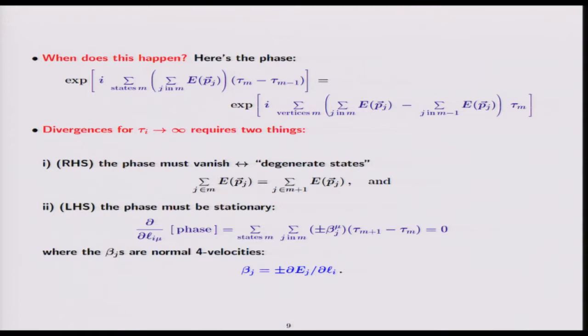Long-lived or infrared divergences come about when the phases vanish and the t integrals diverge. When does this happen? Here's the phase again, reorganized. We can re-express that as the phase in terms of the difference of energies between adjoining states times the time at which the two states change one into the other. The divergences require two things: first, the phase in the right hand side has to vanish—the states ought to be degenerate. But that's not the only thing. The second thing is that the phase must be stationary. Otherwise, as you sum over states, you can avoid this particular point where you end up with large corrections.